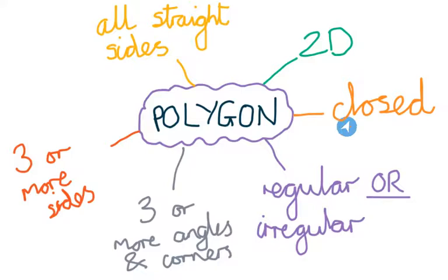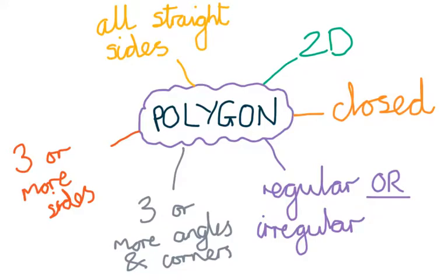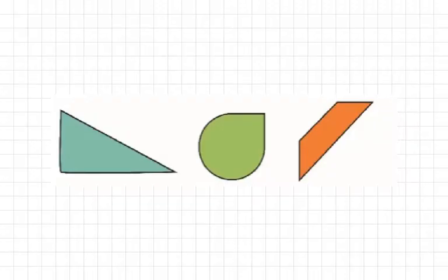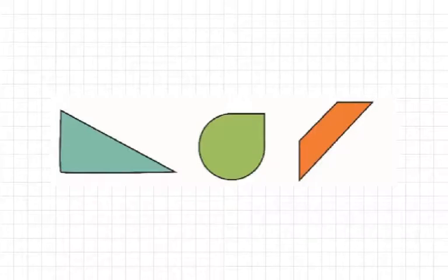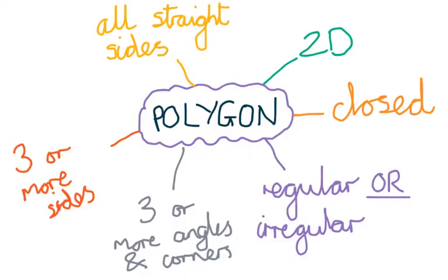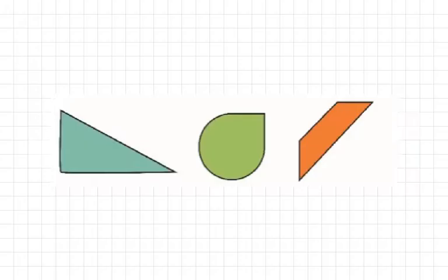So to recap: 2D, closed, could be regular or irregular, three or more sides, angles and corners, and all its sides are straight. So if you have a look at these three shapes here, can you tell me which are polygons and which are not polygons? Think back to these definitions and have a look at these shapes.